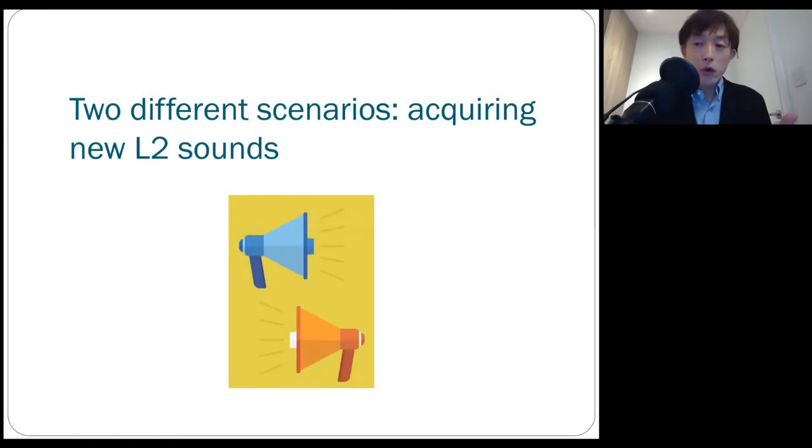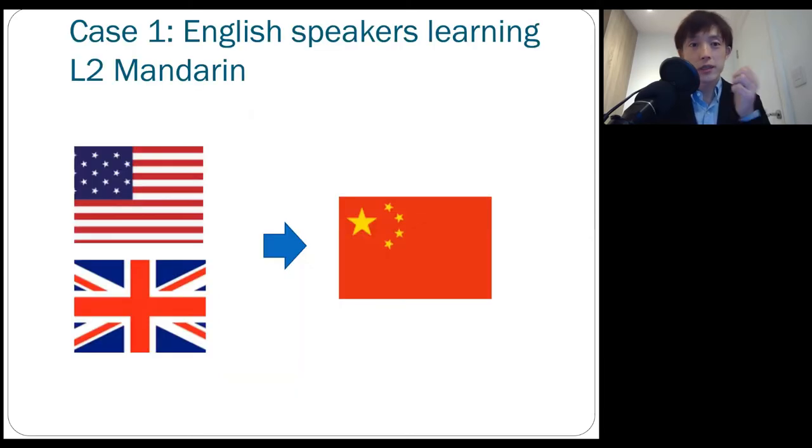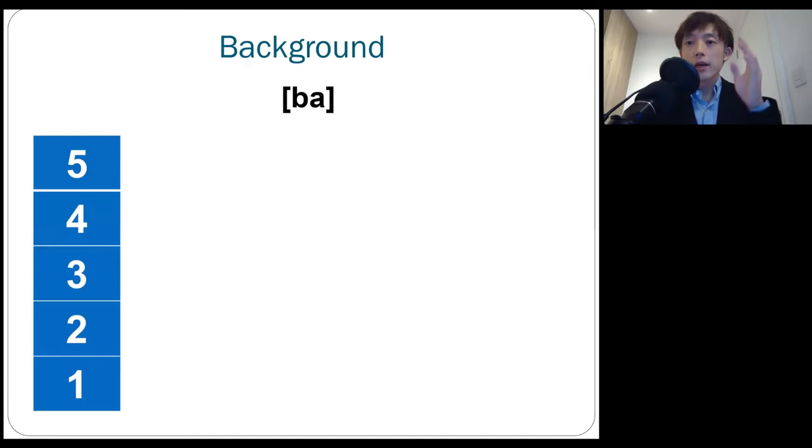So what does that mean? In order to explain, I would like to introduce you to two very well researched instances in second language speech research. First case is native speakers of English learning Mandarin Chinese, which could be very popular as of 2021. As you may already know, in Mandarin Chinese, even one syllable can convey different meanings depending on how you use tone, pitch information.